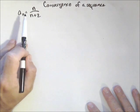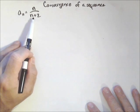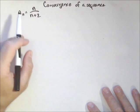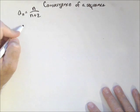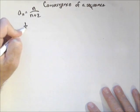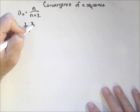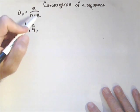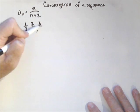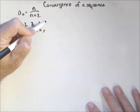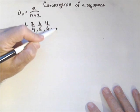So our first one is a sub n equals n over n plus two, which if we were to write out the terms starting with one, we would have one third, two over four, three over five, four over six, so on and so forth.